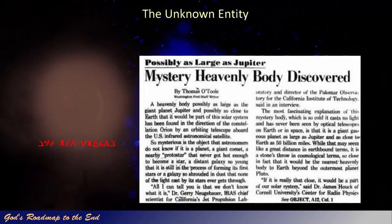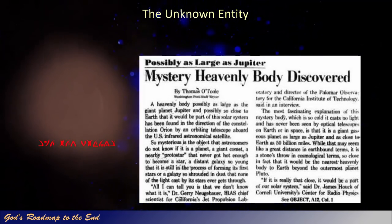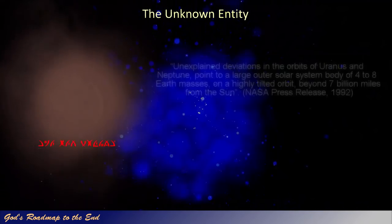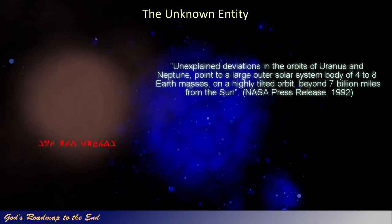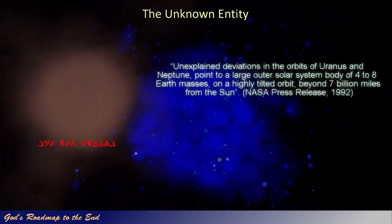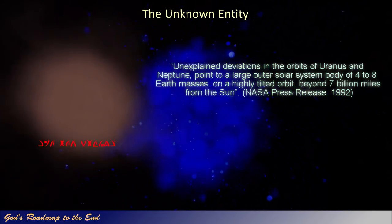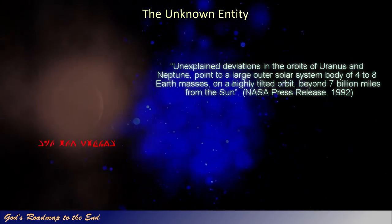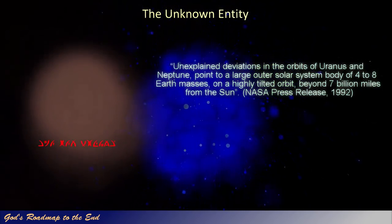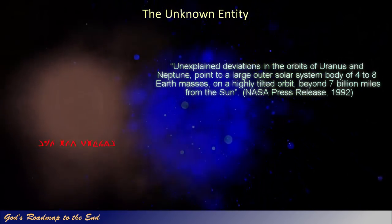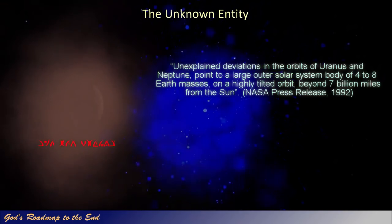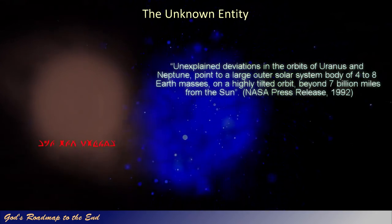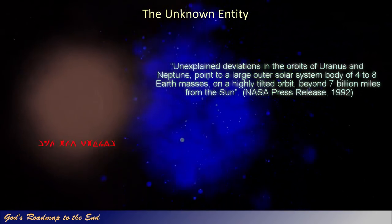After this point, no further information was provided until nine years later, when another press release also by NASA found its way into the public domain. The writer stated: 'Unexplained deviations in the orbits of Uranus and Neptune point to a large outer solar system body of 4 to 8 Earth masses, on a highly tilted orbit, beyond 7 billion miles from the Sun.' This release provides more information on the possible size and orbit, and the distance indicates a definite decrease over the nine years between the two press releases.